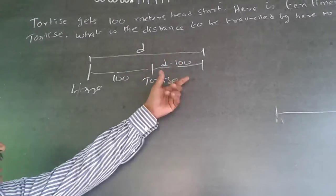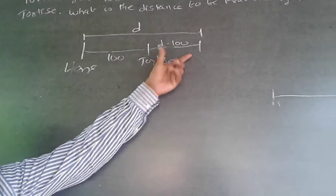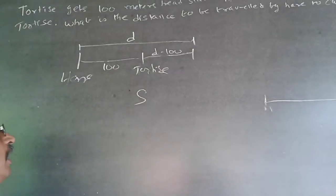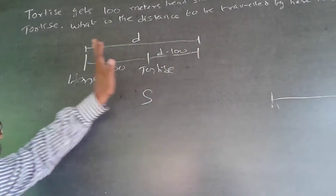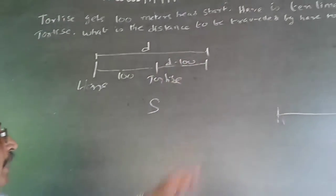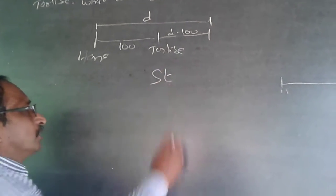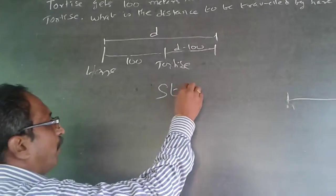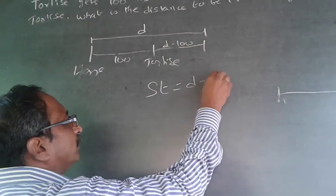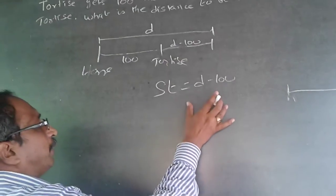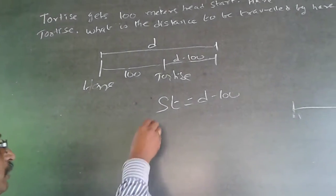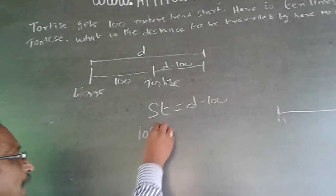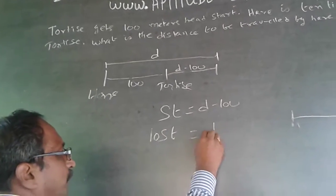If this distance is d, the tortoise's distance becomes d minus 100. Let the speed of the tortoise be s. The time taken for the tortoise to go from this point to that point is the same as the time taken for the hare. Let time be t. So s times t equals d minus 100, which is the distance covered by the tortoise. The hare is 10 times as fast, so hare's speed is 10s, and time taken is the same t, giving distance d.